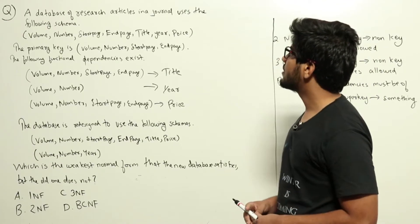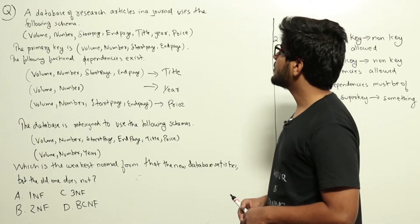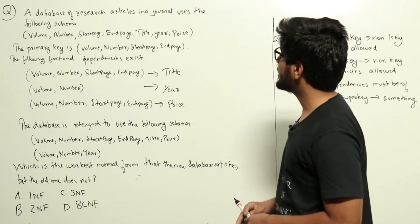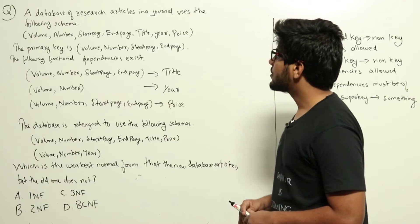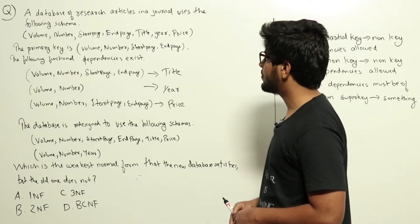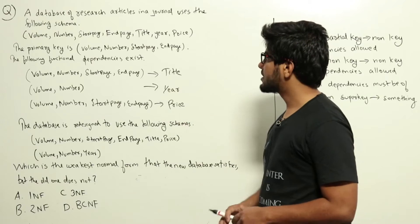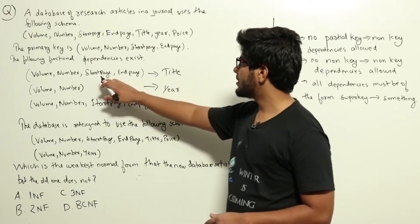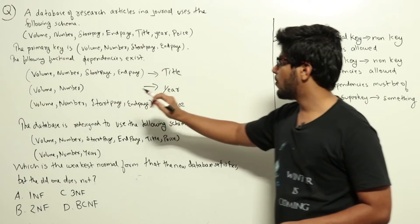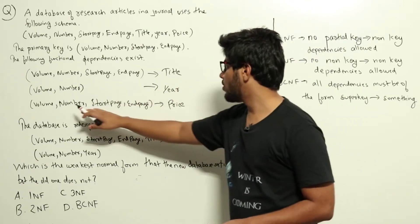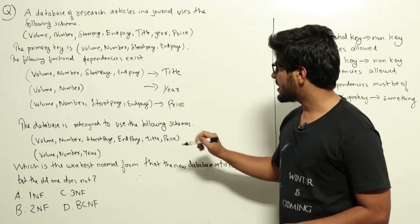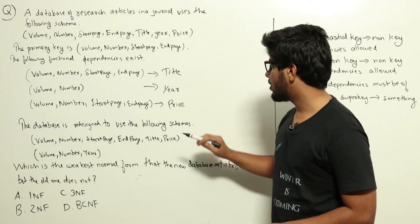A database of research articles in a journal uses the following schema: Volume, Number, Start Page, End Page, Title, Year, Price. The primary key is Volume, Number, Start Page, End Page. The following functional dependencies exist: Volume, Number, Start Page, End Page gives Title; Volume and Number gives Year; Volume, Number, Start Page, End Page gives Price.